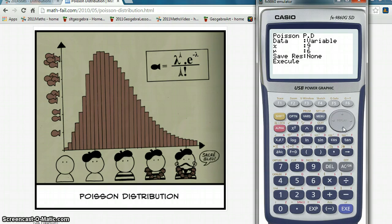We push execute, and we get the probability of 0.0688, which is the same as the answer in the book on page 189.